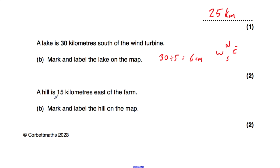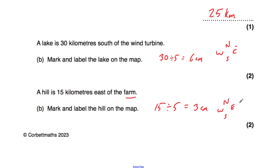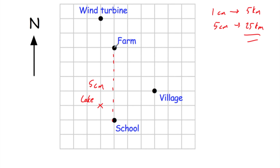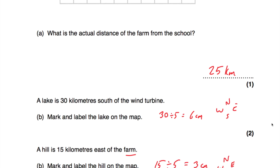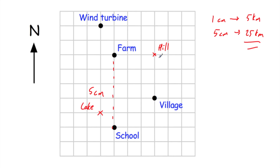A hill is 15 kilometers east of the farm — mark and label the hill on the map. 15 divided by five is three, so it'll be three centimeters, because three lots of five is 15. It's east — north, east, south, west — so it's going to be three centimeters east, to the right of the farm. Go to the farm and go three centimeters east: one, two, three. That's where the hill will be.